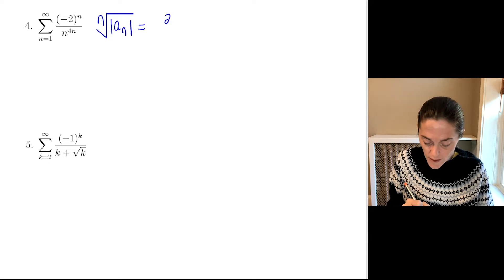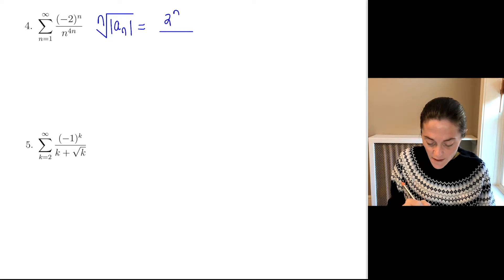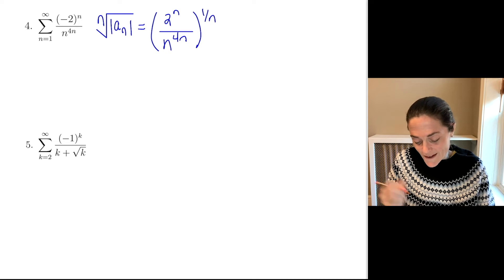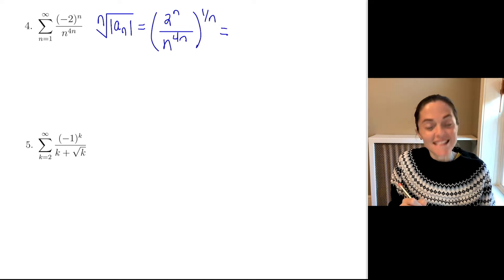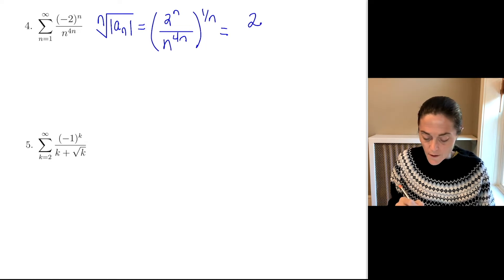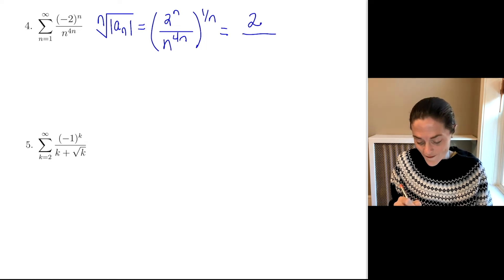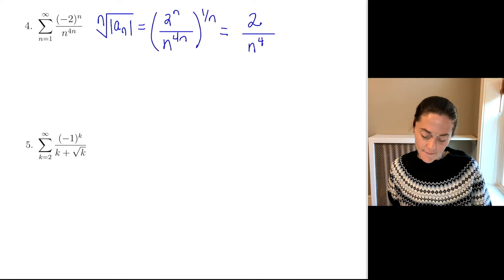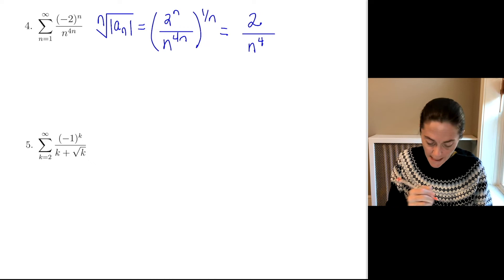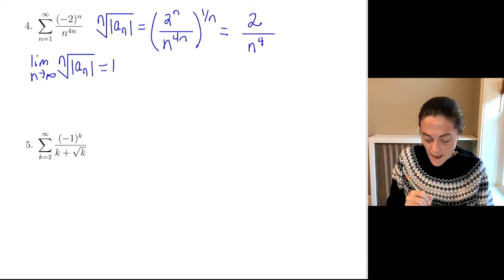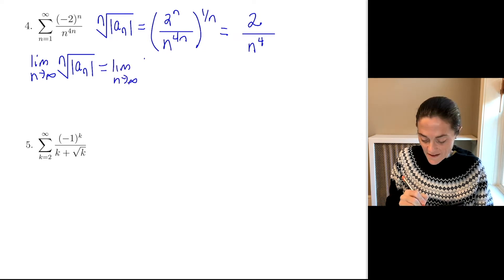We will have 2 to the n in the numerator and n to the 4n in the denominator, all raised to the 1 over n power. This is the n-th root of the absolute value of a_n. We can simplify: 2 to the n raised to the 1 over n power is just 2, and n to the 4n raised to the 1 over n power is n to the 4th power. This is wonderful because I can take the limit of 2 over n to the 4th as n goes to infinity.